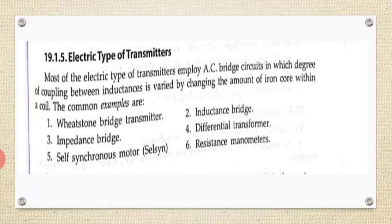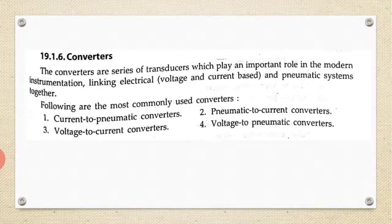For electric type transmitters, most employ AC bridge circuits in which the degree of coupling between inductances varies. The inductance is varied by changing the amount of iron core within a coil. Examples include: piston bridge transmitter, inductance bridge, impedance, differential transformer, self-synchronous motor, and resistance manometer. The most commonly used converters are current-to-pneumatic, pneumatic-to-current, voltage-to-current, and voltage-to-pneumatic converters.